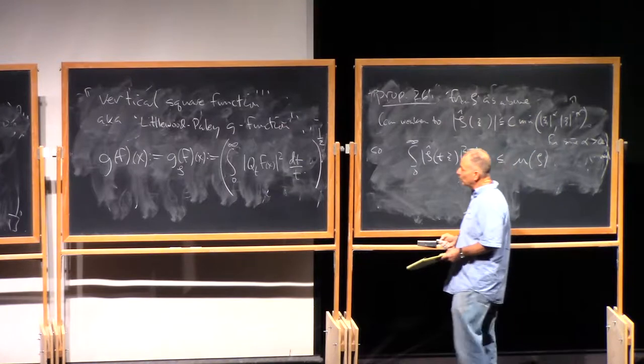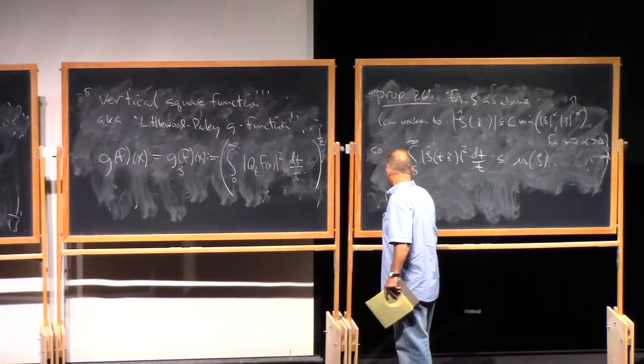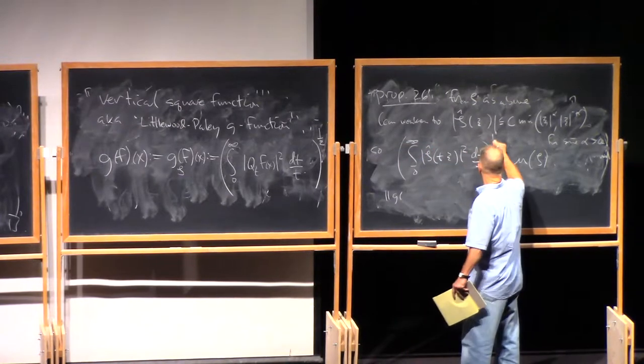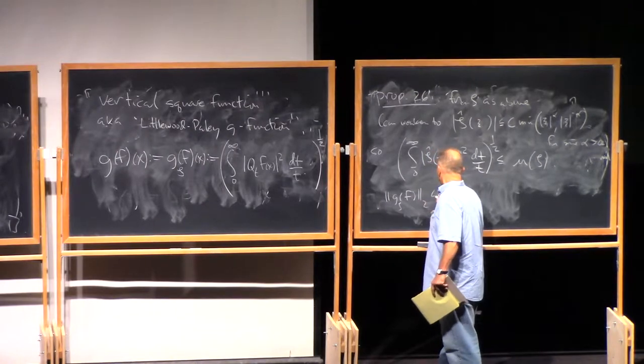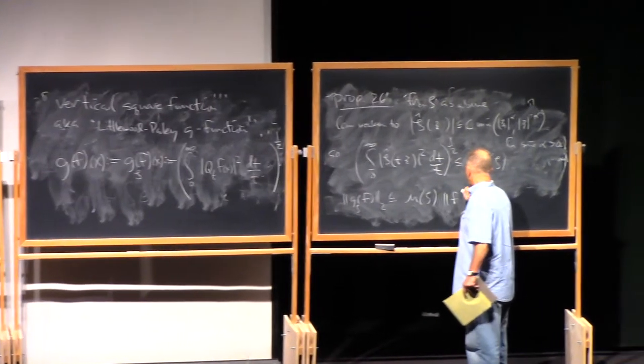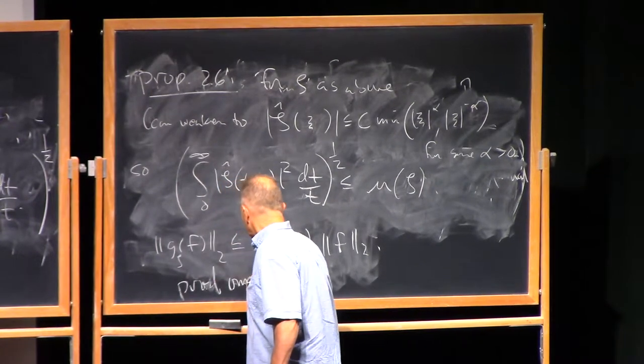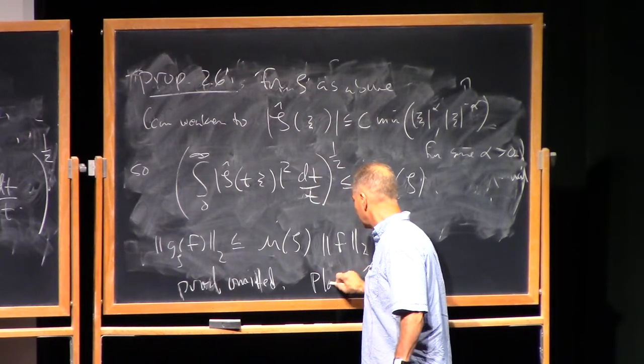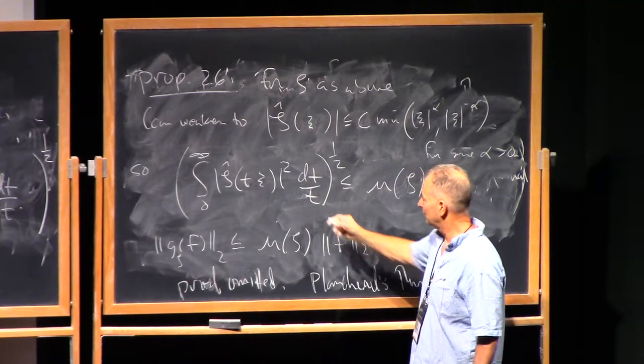So then, what we're gonna say is that the conclusion is that, maybe let me do it like this, that the L2 norm of g_zeta is less than or equal to mu of zeta times the L2 norm of f. And I'm gonna omit the proof. It's actually in the notes, but this is, again, just an exercise in Plancherel's theorem.